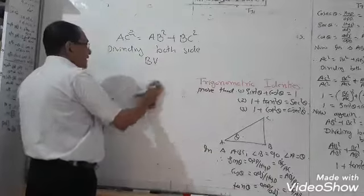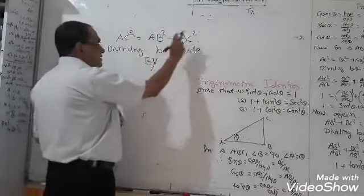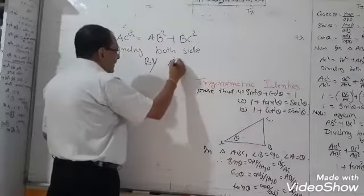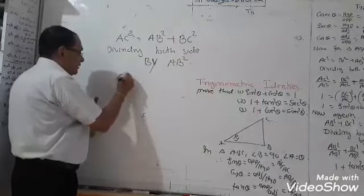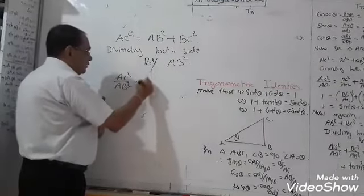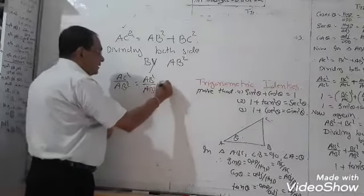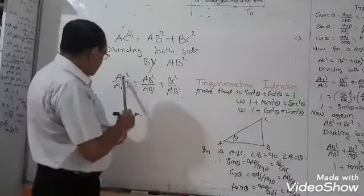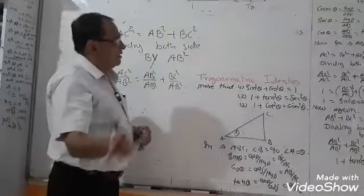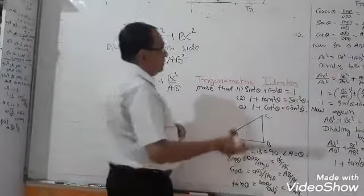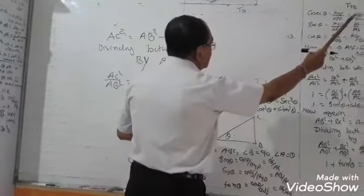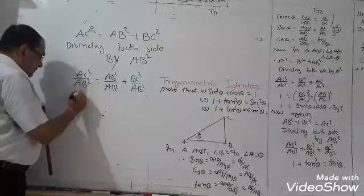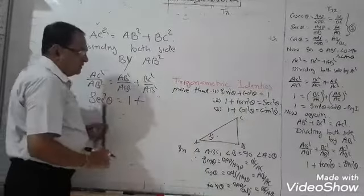Second time, starting again from AC² equals AB² plus BC², now dividing both sides by AB²: AC²/AB² equals 1 plus BC²/AB². AC/AB is sec θ, so AC²/AB² is sec²θ. BC/AB is tan θ, so BC²/AB² is tan²θ. Therefore, sec²θ is equal to 1 plus tan²θ.